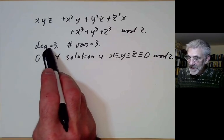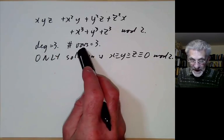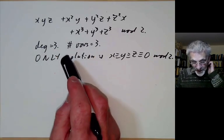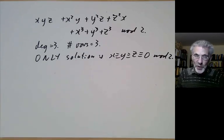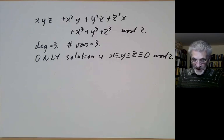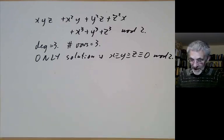In fact, there's always a degree d polynomial in d variables with exactly one solution. It's actually given by the norm of a certain finite field extension, but we won't go into that.